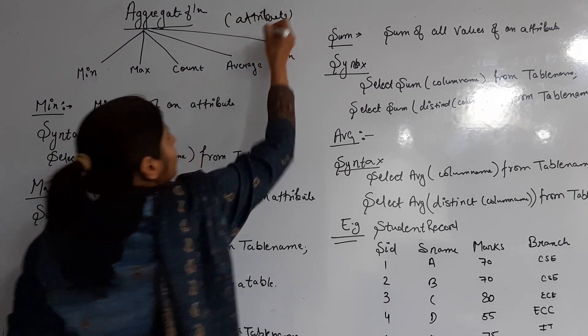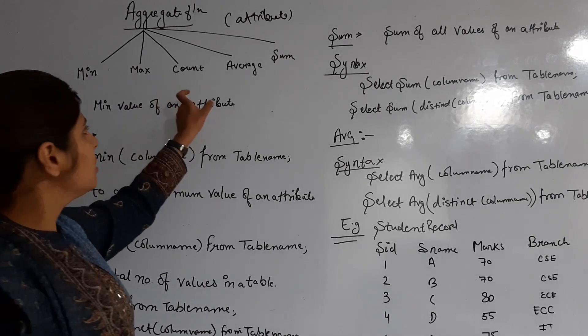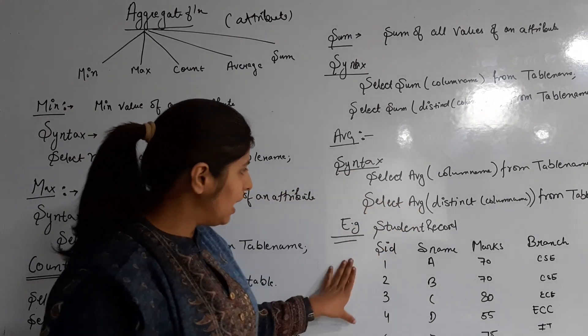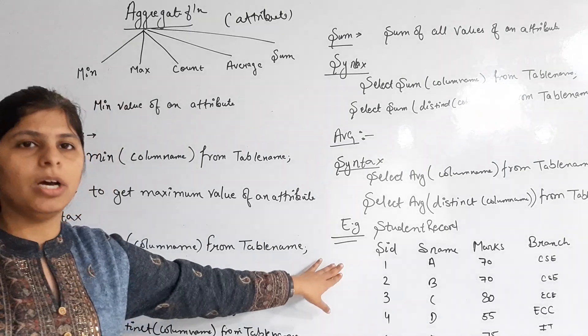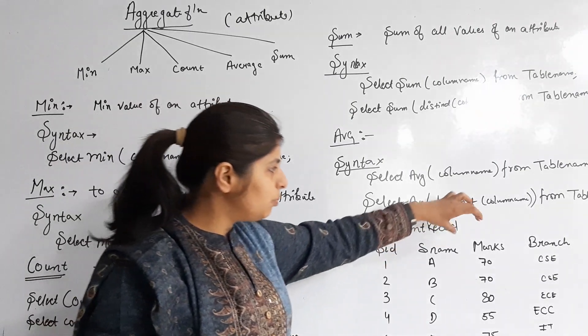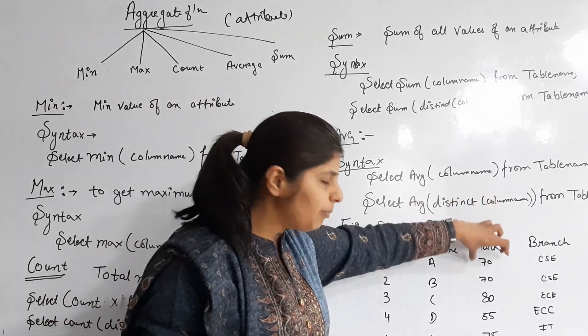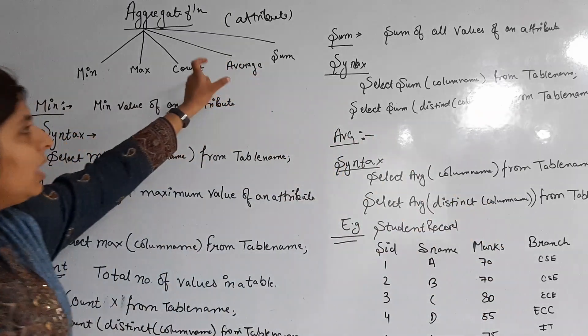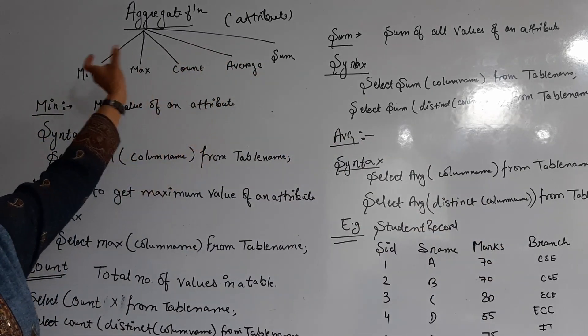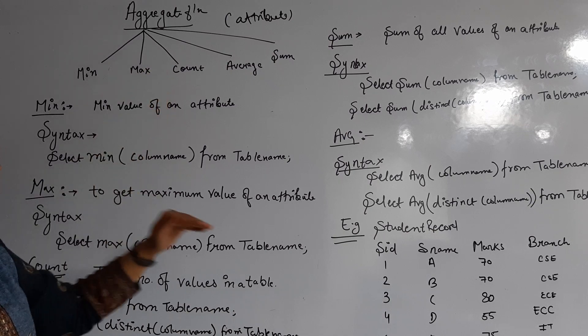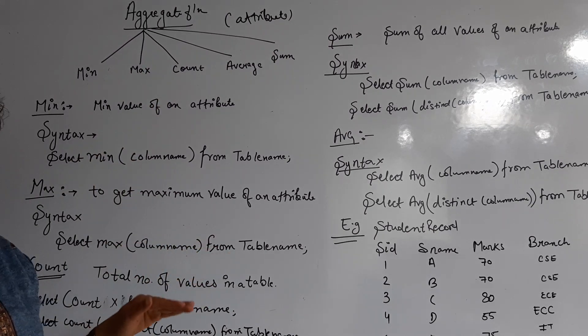You can apply aggregate functions on a particular column. Suppose I have taken a table, that is student record. In student record, the particular column values like marks - I can only apply these aggregate functions on a particular column.